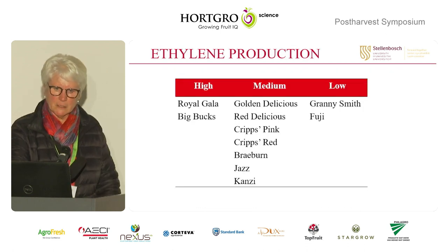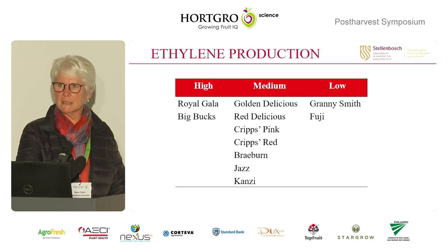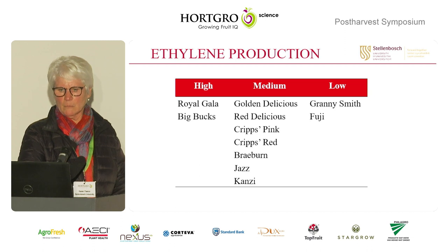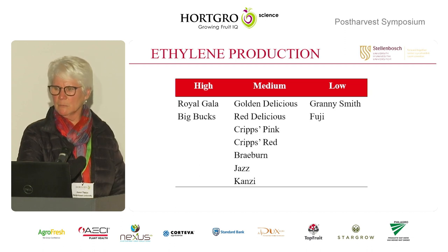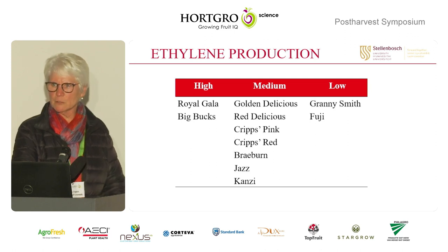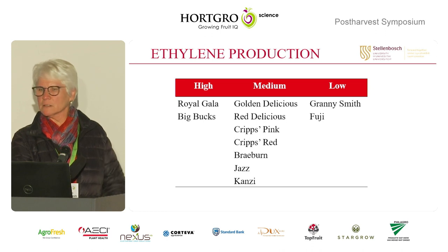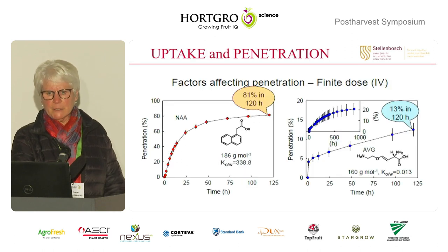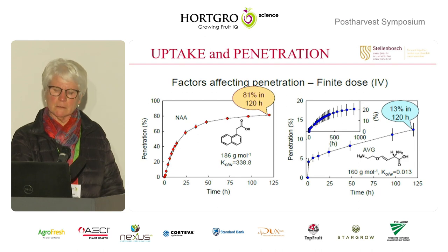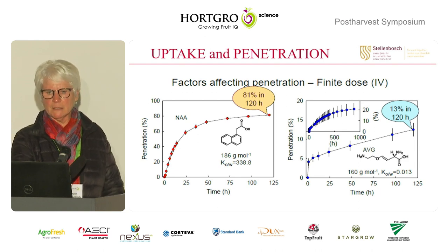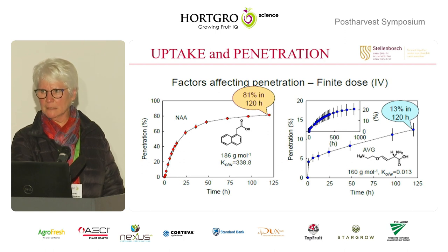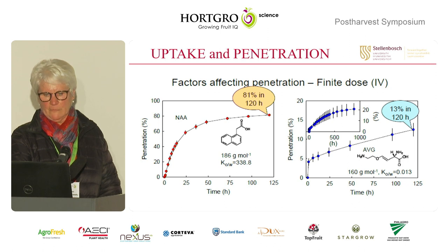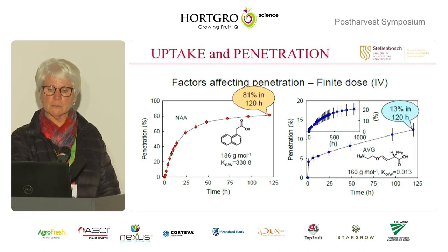A few important considerations: there are differences in ethylene production between cultivars. Galas typically produce more ethylene than most cultivars, which are medium producers, whereas Granny Smith and Fuji tend to produce less. That's also why Granny Smith is not as responsive to these treatments as Gala, for instance. Another very important point when deciding to apply Retain is that it's a molecule that is relatively difficult to absorb and penetrate the tree.